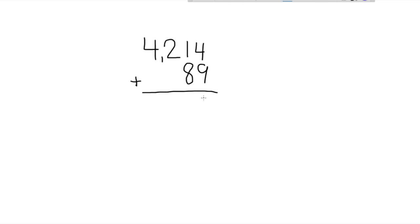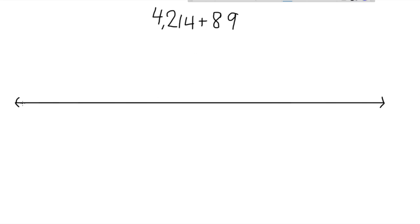You can add 4214 and 89 the traditional way by adding ones with ones and regrouping to form tens, and then adding tens with tens and regrouping to form hundreds. Or you can do this the easier way and use an open number line.